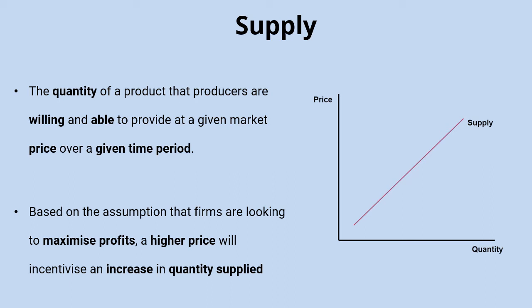We find the opposite with supply because producers are looking to maximize their profits. An increase in price gives them the incentive to increase the quantity they supply in the hunt for higher profits. So on the diagram we get an upward sloping supply curve — as price increases, suppliers are incentivized to increase their quantity supplied.